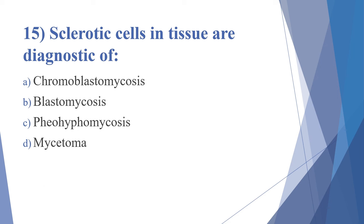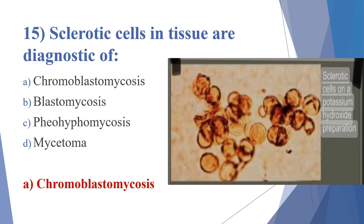Fifteenth question: sclerotic cells in tissue are diagnostic of — chromoblastomycosis, blastomycosis, phaeohyphomycosis, mycetoma. The answer is chromoblastomycosis. Sclerotic bodies are seen in chromoblastomycosis; they are thick-walled round cells with multiple internal transverse septa, also called medlar bodies, muriform cells, or copper pennies.